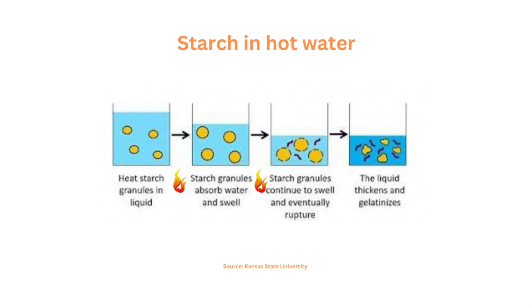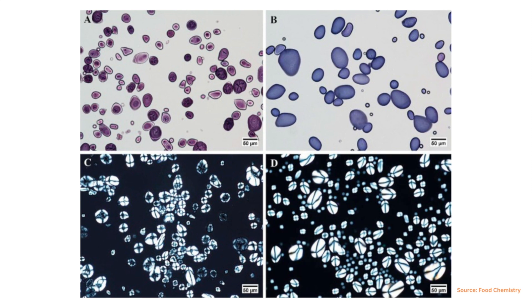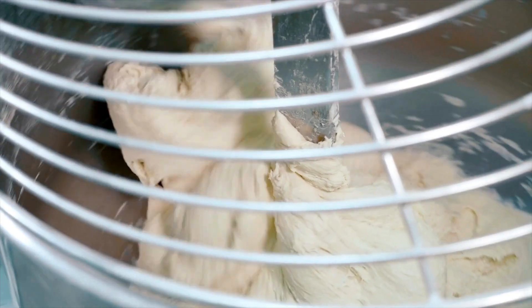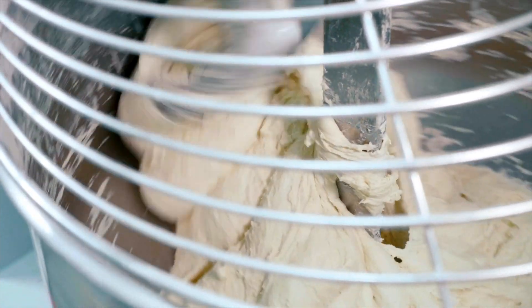During heating and in the presence of excess water, starch granules initially imbibe and bind water, causing them to gradually swell and form a viscous slurry. As heating continues and temperature increases, the granules start losing their crystallinity, becoming amorphous, as evidenced by the disappearance of the Maltese cross birefringence observed via light microscopy.